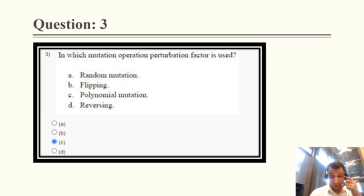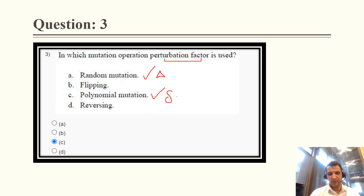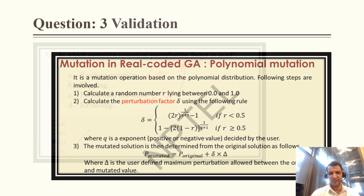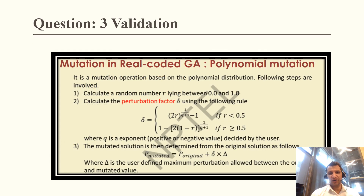Question 3: In which mutation operation is the perturbation factor used? In random mutation, delta is used which is known as the perturbation. But in polynomial mutation, this delta is known as the perturbation factor. So the correct answer is option C — polynomial mutation — and the validation confirms that in a real-coded GA, polynomial mutation uses the perturbation factor.